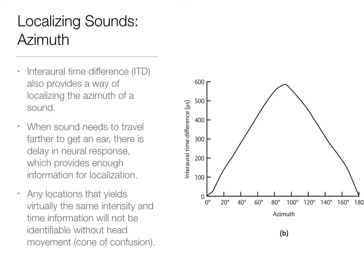We can see on this graph that ITD is greatest at 90 degrees — when the speaker is pointed at your right ear, it takes the longest to reach your left ear. Not only are you not getting as much information because of acoustic shadow, but the sound has to travel all the way around your whole head to get into that left ear. Just like ILD was zero at 0 and 180 degrees, the same pattern appears here for ITD.